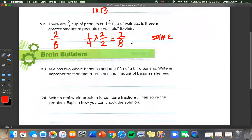Mia has 2 whole bananas and 1 fifth of a third banana. Write an improper fraction that represents the amount of bananas she has. So we have 2 and 1 fifth. Let's use that multiplication trick. 5 times 2 is 10. So 10 fifths plus 1 fifth equals 11 fifths of banana left.